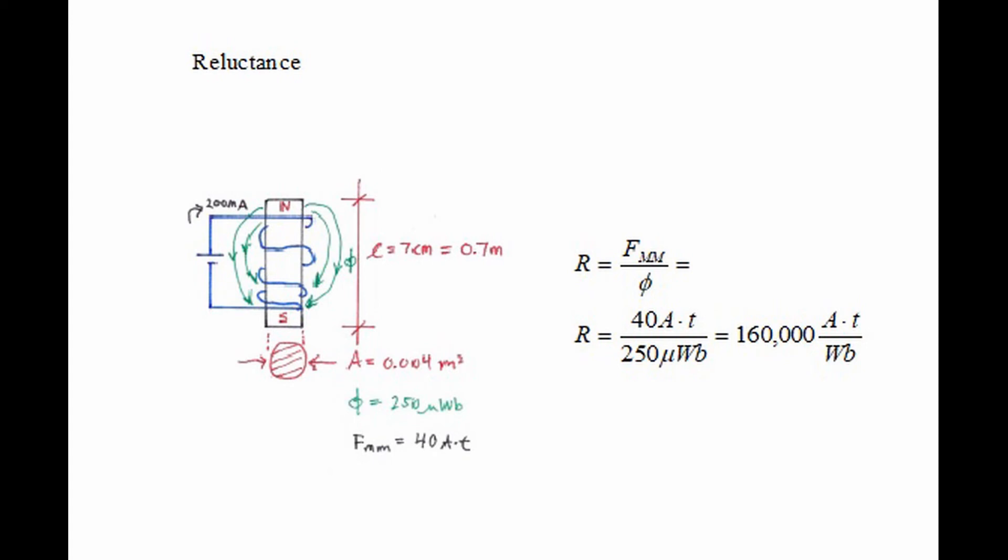Notice that the reluctance is a big number, which means this metal does not want to become magnetized. The opposite occurs when we want to demagnetize it—it will also oppose the change.